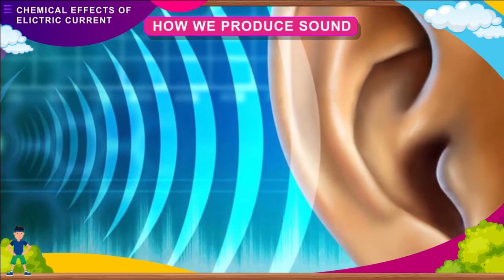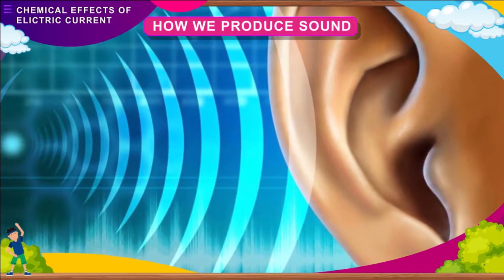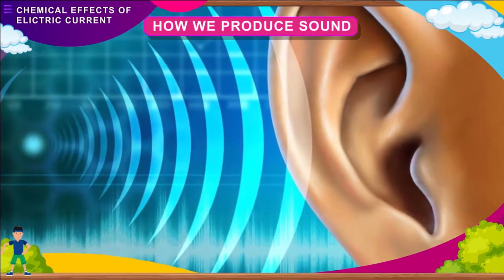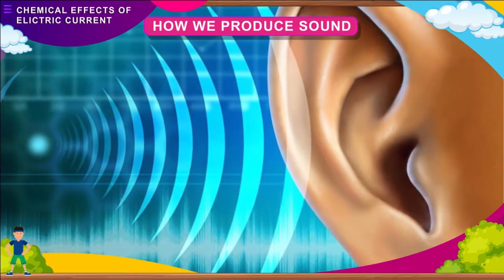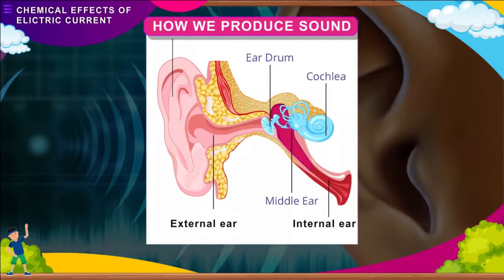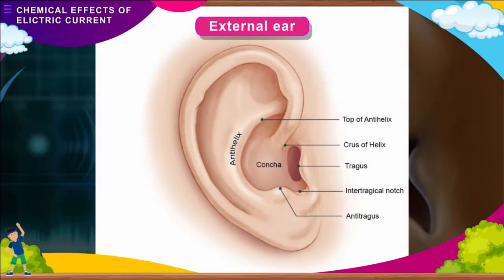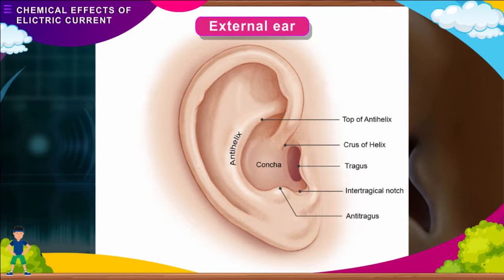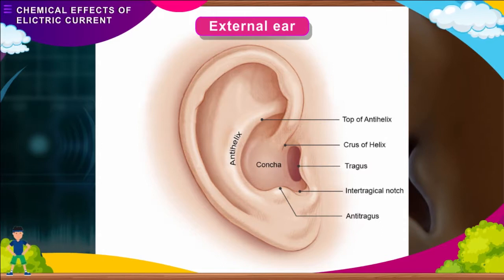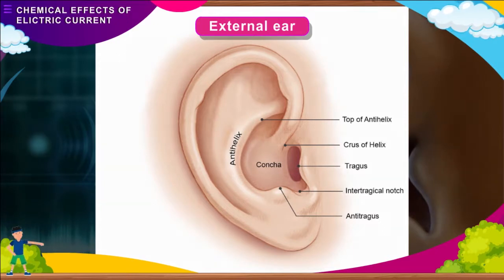When sound waves reach our ears, we hear the sound. The human ear can be divided into three main parts: the external ear, middle ear, and internal ear. The external ear or pinna appears like a funnel. Its function is to catch sound waves and direct them towards the middle ear.